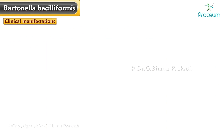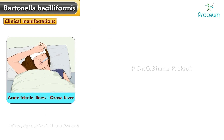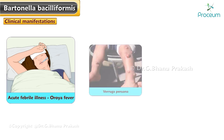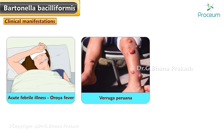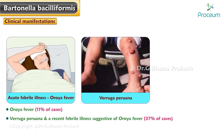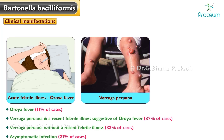Clinical manifestations: Infection with Bartonella bacilliformis causes an acute febrile illness known as Oroya fever, and a secondary phase with chronic cutaneous manifestations known as Verruga peruana. Oroya fever alone is seen in 11% of cases; Verruga peruana with a recent febrile illness suggestive of Oroya fever in 37%; Verruga peruana without a recent febrile illness in 32%; and asymptomatic infection in 21% of cases.